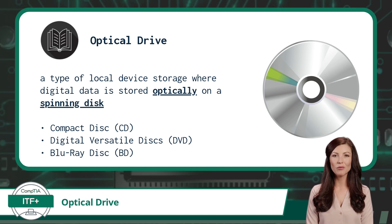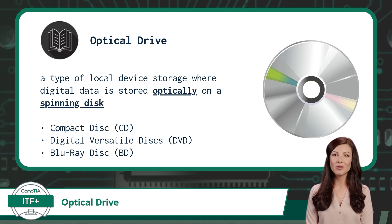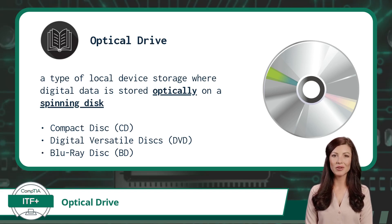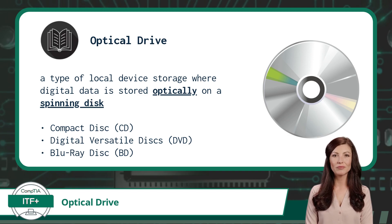Similarly, when writing data to a disk, the optical drive uses a laser to etch or burn information onto the disk's surface. This process creates pits and lands on the disk that represent the data being written. Once the data is written, it can be read by any compatible optical drive.